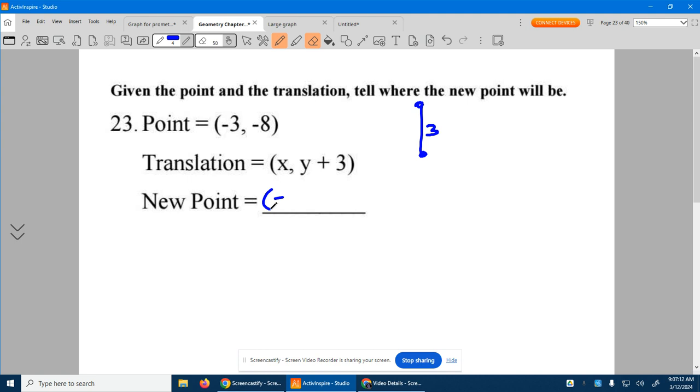So our x stays the same, so it stays negative three. Our y was negative eight. We want to add three to it. So it's now going to move to where? Negative five. It simply moved up three units. It slid up three. That's the translation.